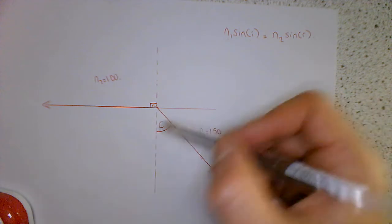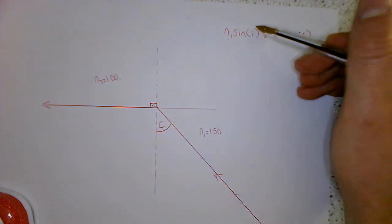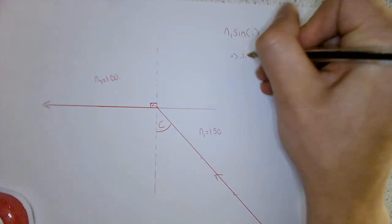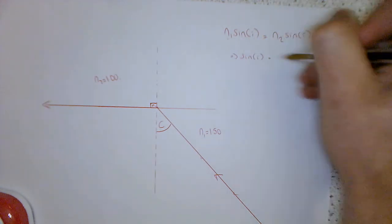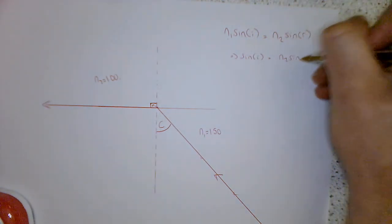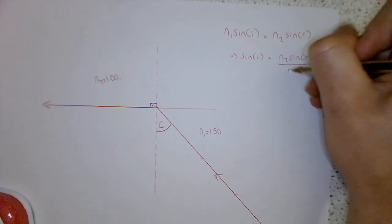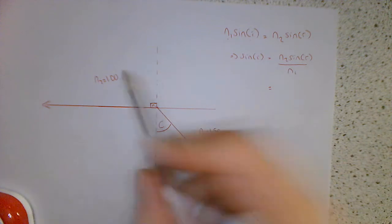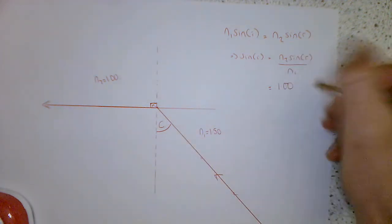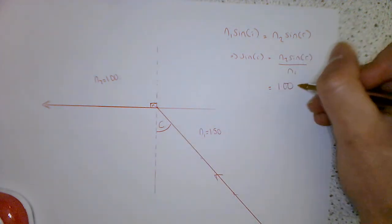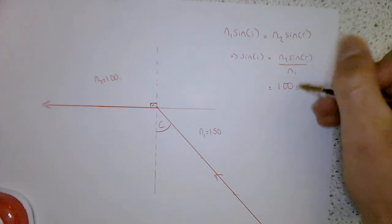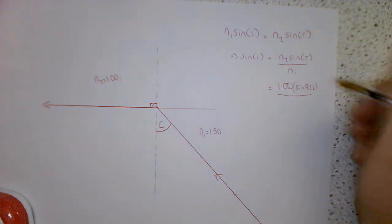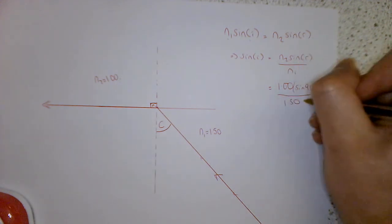So we want to calculate C which is going to be the I in this one here. So I'm going to rearrange this so sine I is going to be N2 sine R over N1. So we're actually in a position to calculate this. So N2 is 1, sine R is sine of 90, and those of you who've met this in math should know that sine of 90 is equal to 1 which is nice. And then N1 is 1.50.